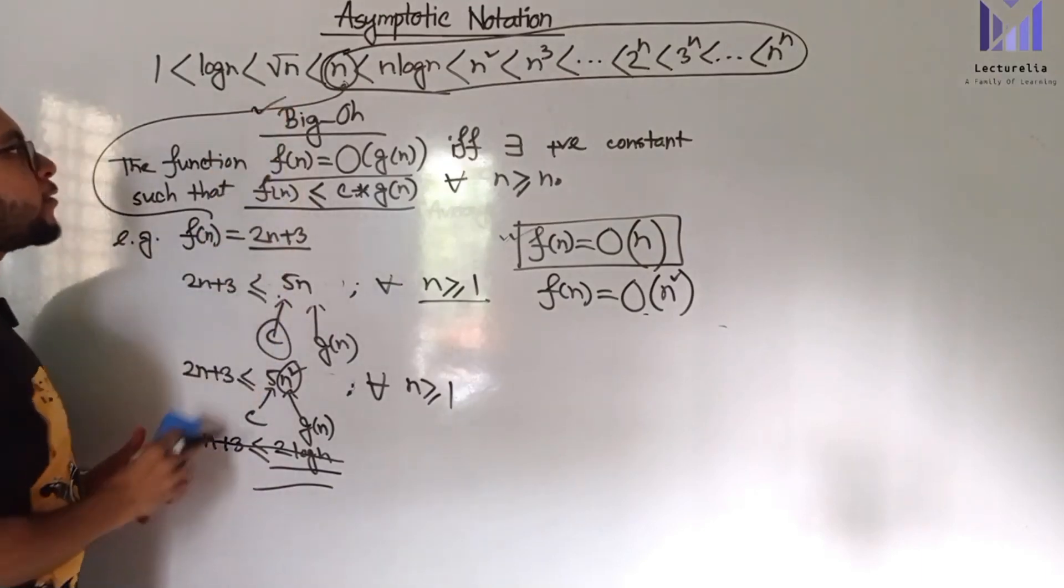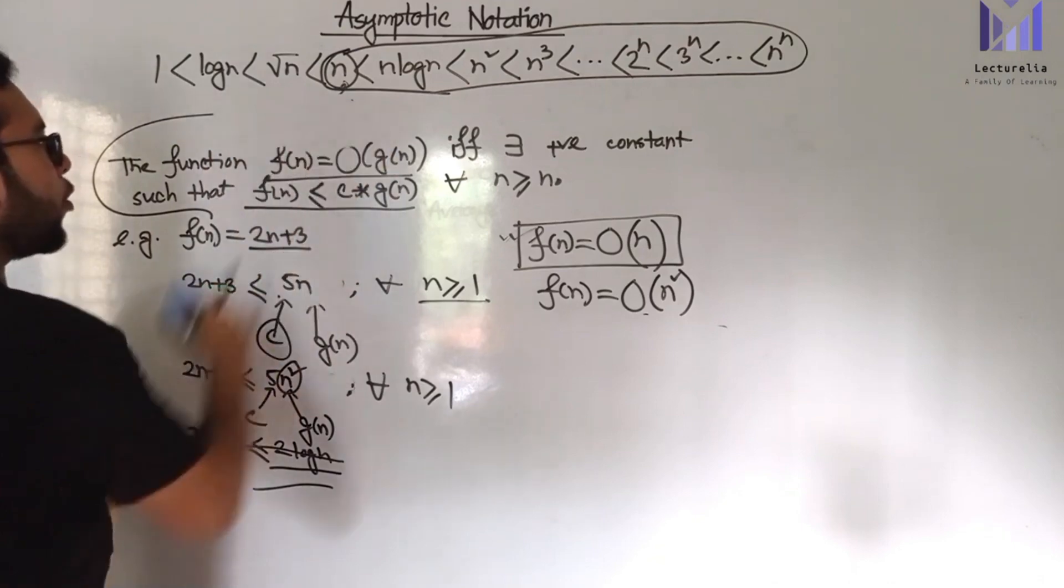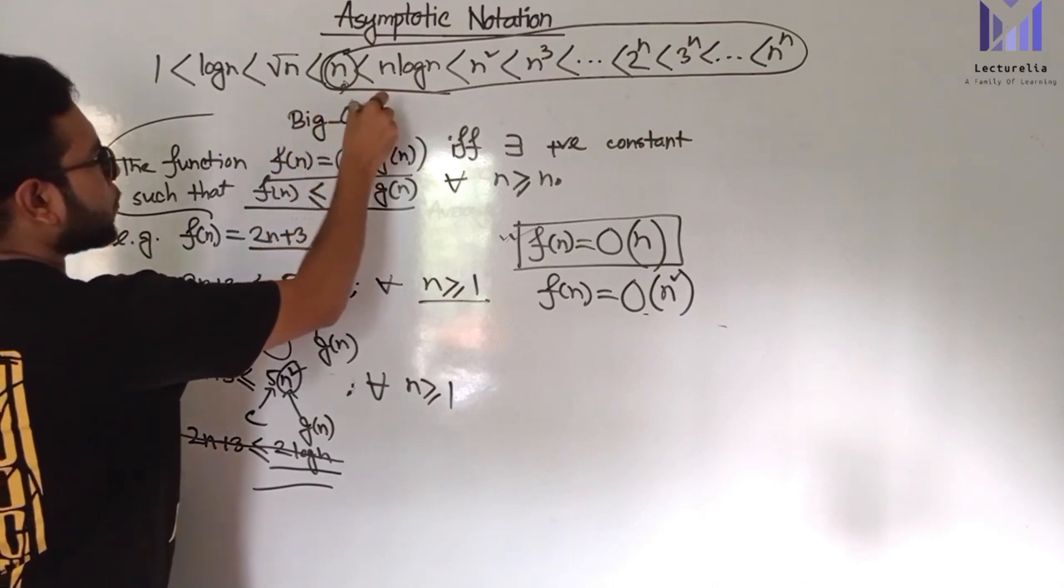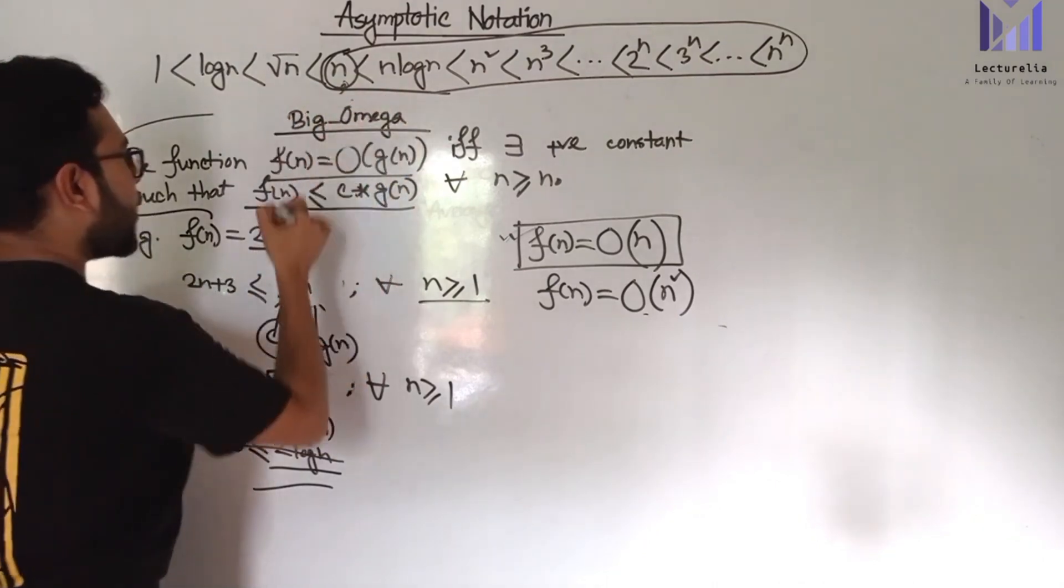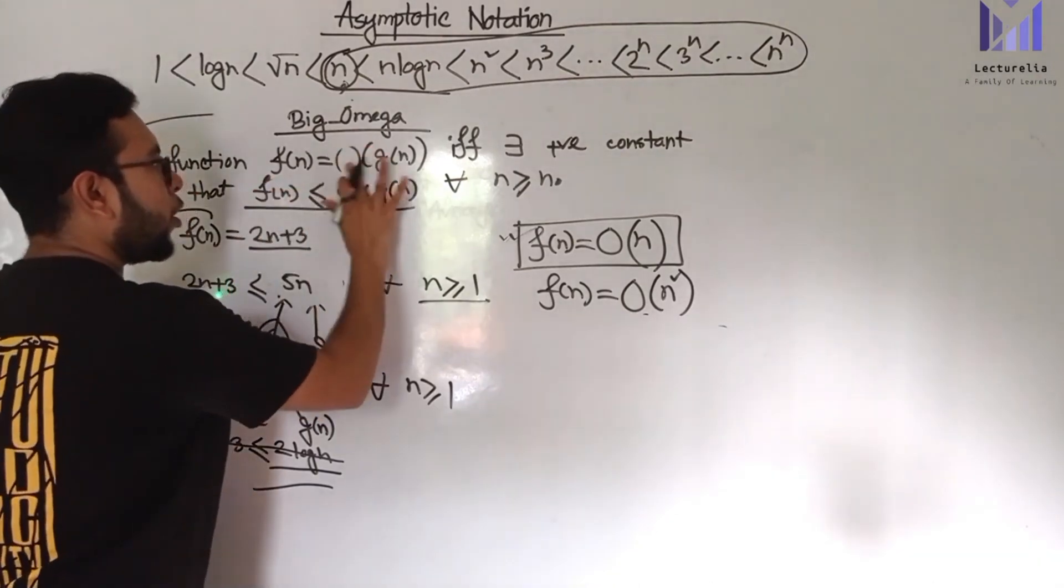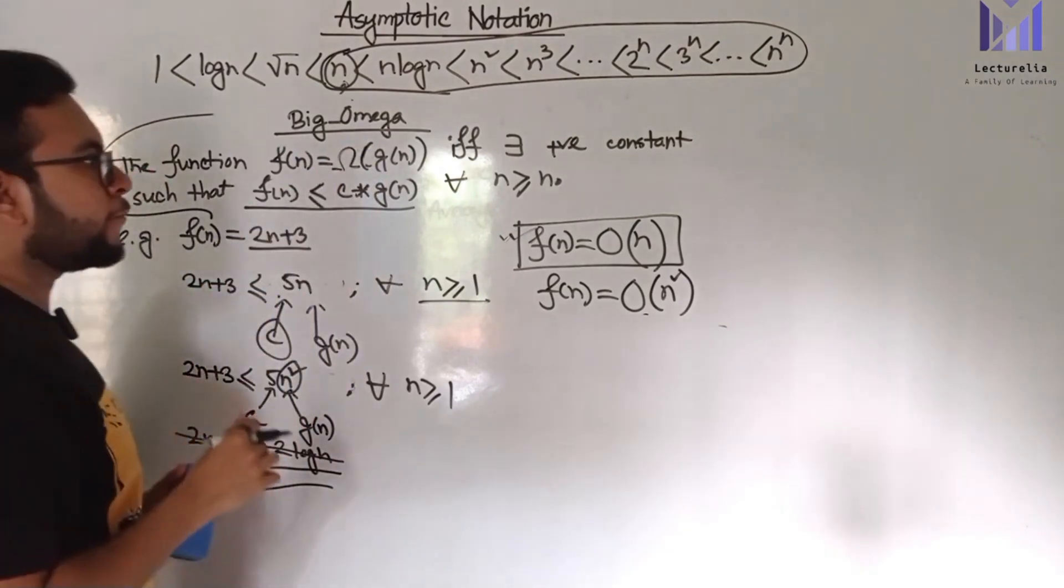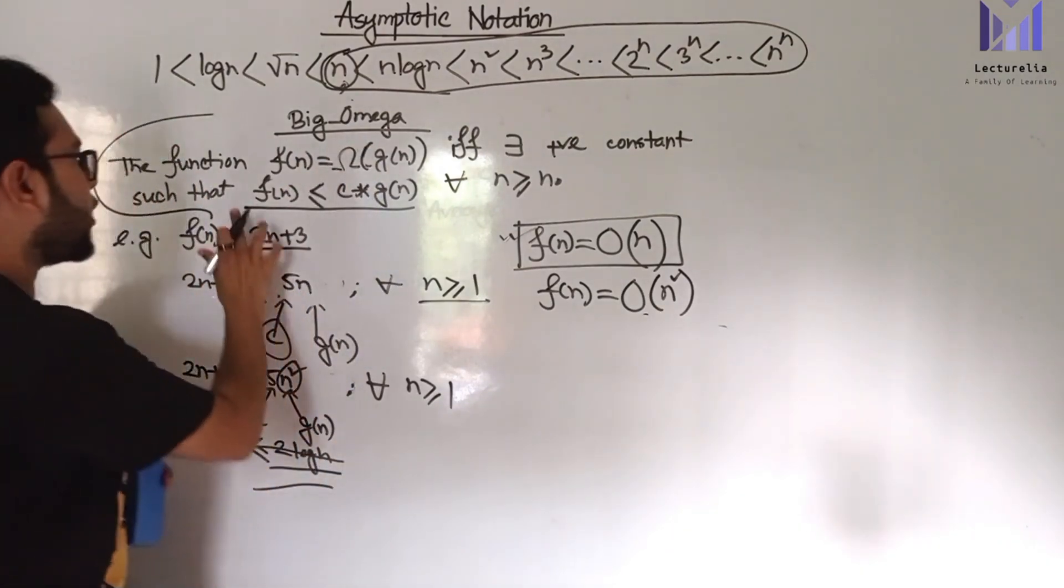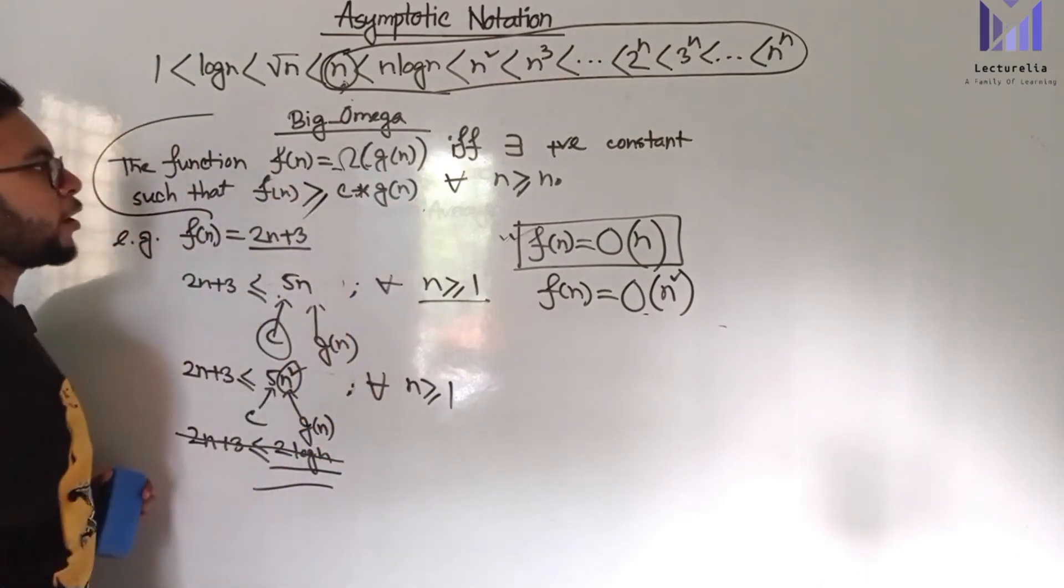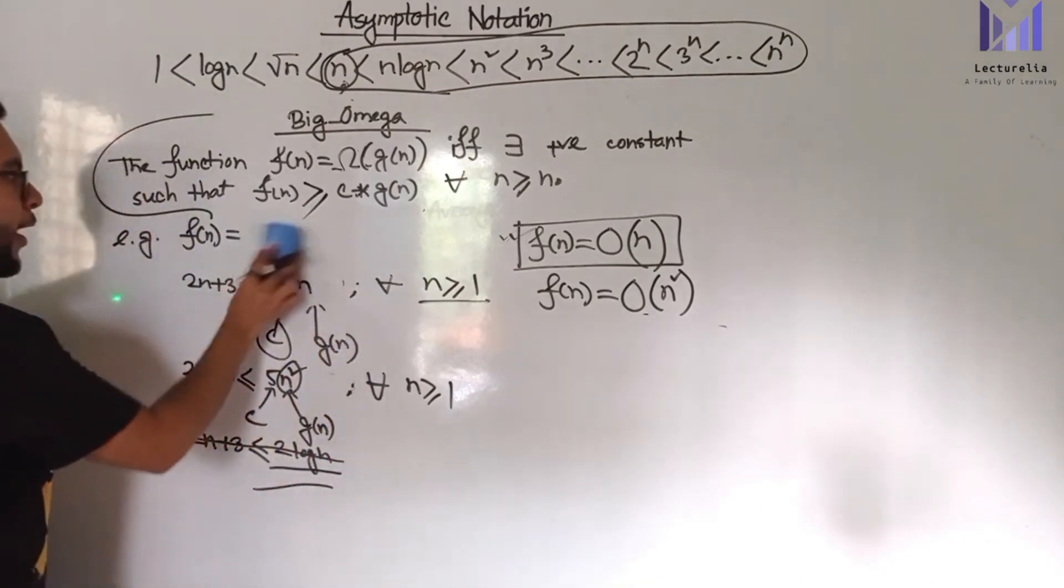Hello, discussing Big O notation. Next is Big Omega. The Big Omega definition: the function f(n) equals Omega of g(n) if and only if there exists positive constant such that function of n is greater than or equal to c into g(n) for all n is greater than or equal to n₀.